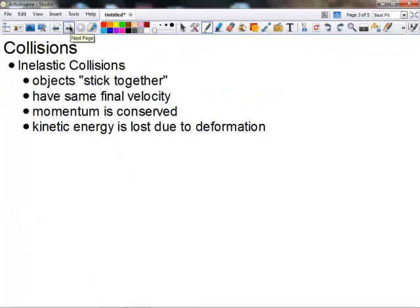Our first kind of collision is an inelastic collision. In an inelastic collision, objects will stick together. Therefore, they will have the same final velocity. In an inelastic collision, the momentum is conserved. However, the kinetic energy is lost due to the deformation of the system. So we'll say that momentum is going to be equal, but the initial kinetic energy of our system is going to be greater than the final kinetic energy of our system. Kinetic energy will be lost.